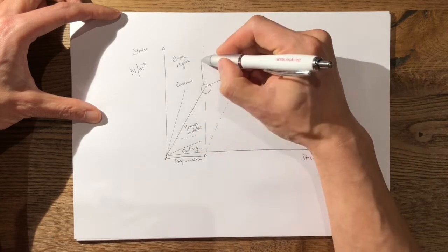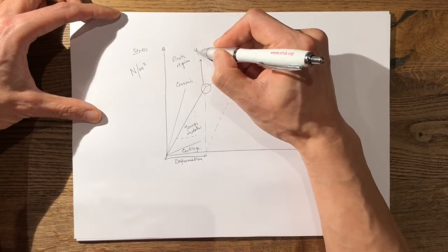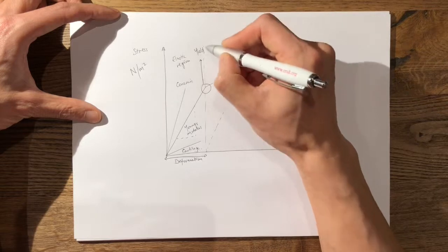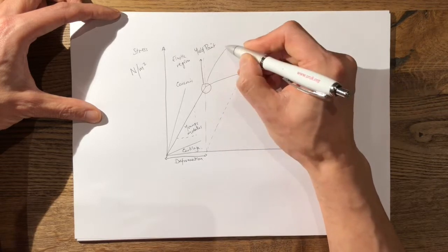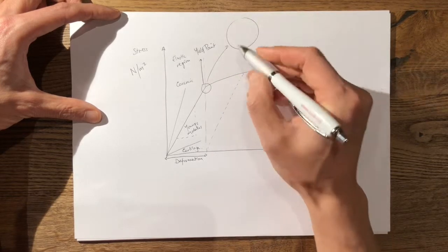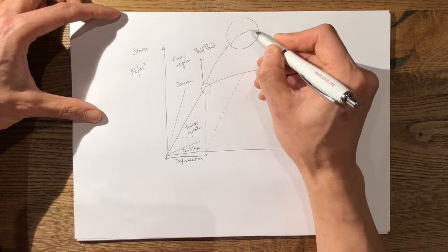This part of the curve is known as the yield point. But the yield point if we zoom in has three distinct areas.